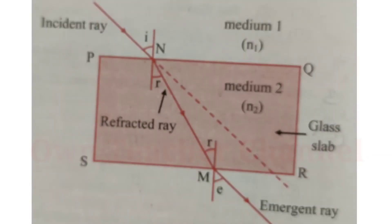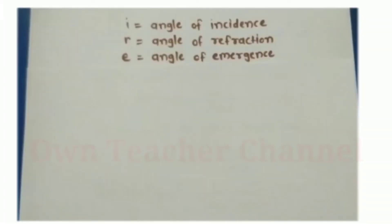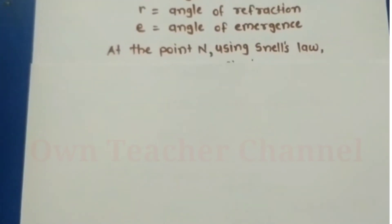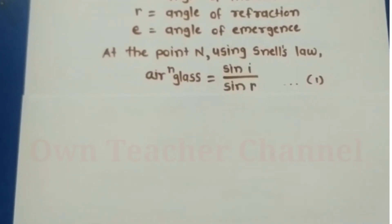In this figure, the first refraction takes place at point N on side PQ, when the ray of light enters from air medium to glass medium. The second refraction takes place at point M on side SR, when the ray of light enters from glass medium to air medium. In the above figure: i = angle of incidence, r = angle of refraction, e = angle of emergence.